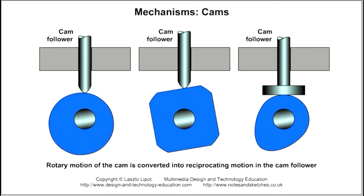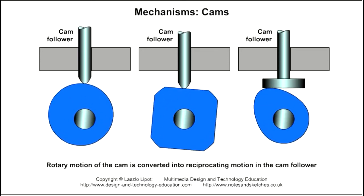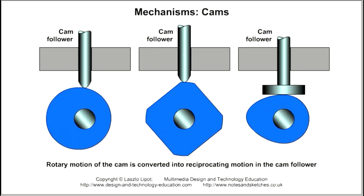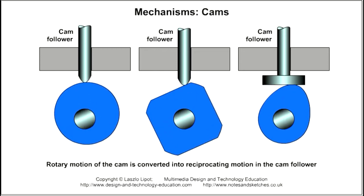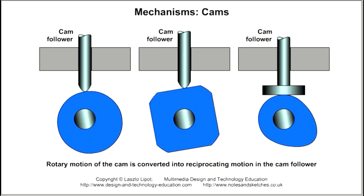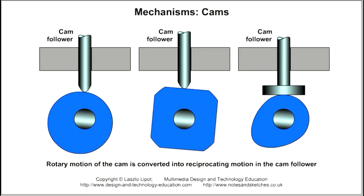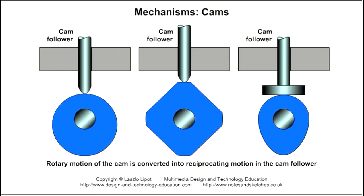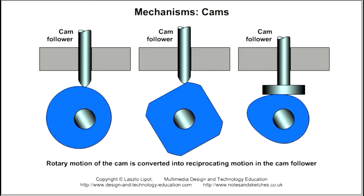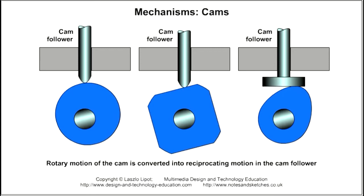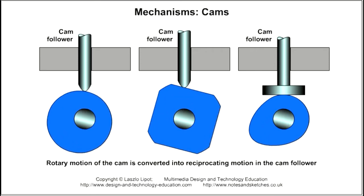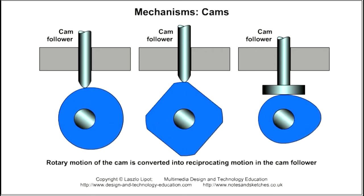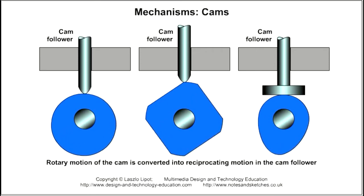A circular cam with an off-centre axis gives a regular reciprocating motion in the cam follower. A square-shaped cam with rounded corners gives a rapid reciprocating motion. An egg-shaped cam gives a back and forth movement of the cam follower with a short time when the cam follower does not move.